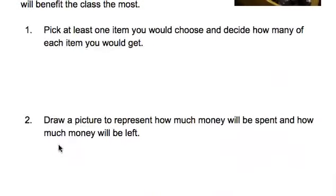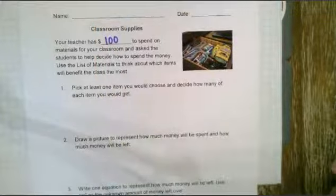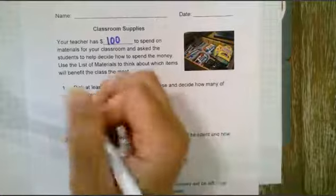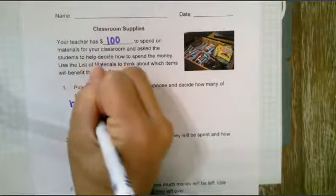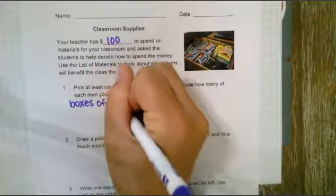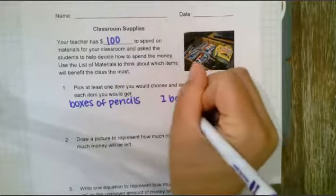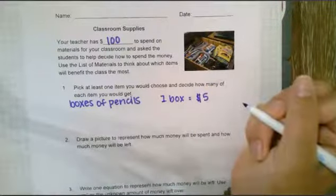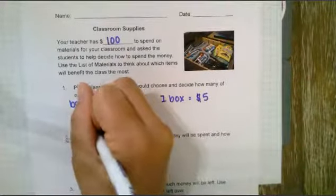Let me show you how I would solve for this task. Let's say my teacher had a hundred dollars to spend on the materials and I want to buy boxes of pencils. One box of pencils is equal to five dollars. So I'm going to say I can buy 10 boxes of pencils.